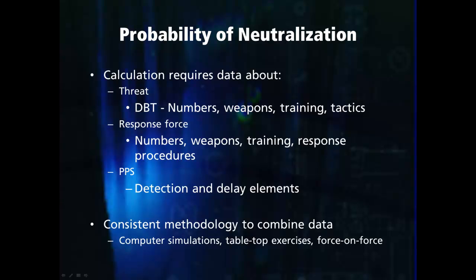The easiest and cheapest way is computer simulation. Computer simulations allow for the detection and delay features of the facility to be modeled, as well as the weapons and shooting proficiency of both the adversary and response force. Then various adversary tactics and response force procedures can be tested. Neutralization analysis can also be done using tabletop exercises or force-on-force exercises, where a team of adversaries stages an attack on the facility. Force-on-force exercises are expensive, but can provide real-life data and verify results from computer simulations.